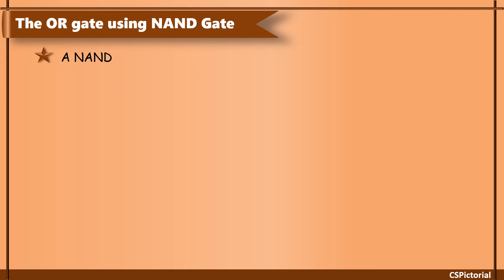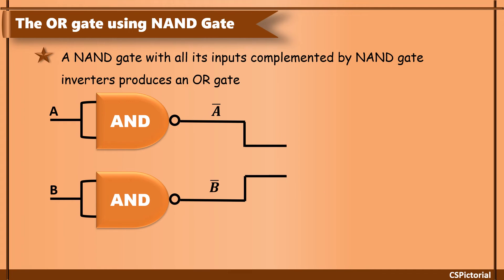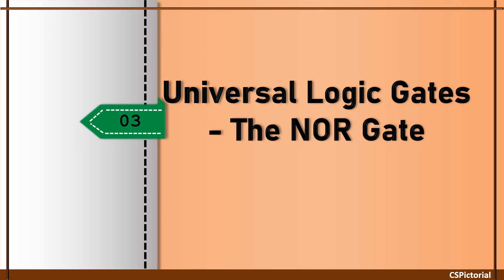A NAND gate with its inputs complemented by NAND gate inverters produces an OR gate. Another universal logic gate is the NOR gate.